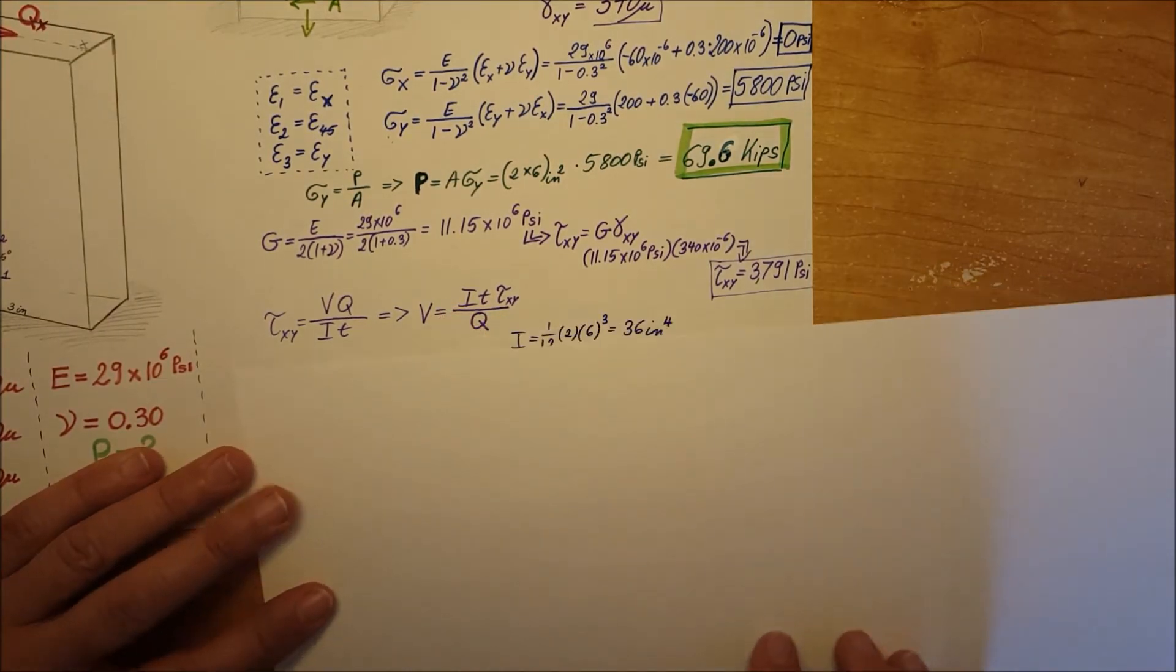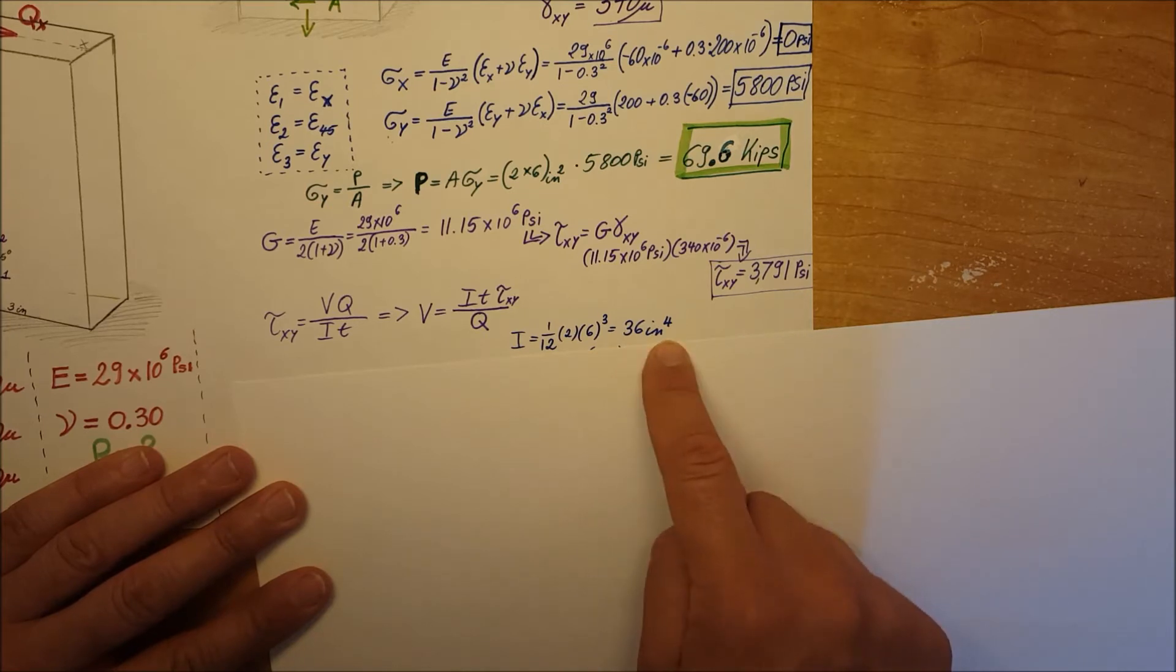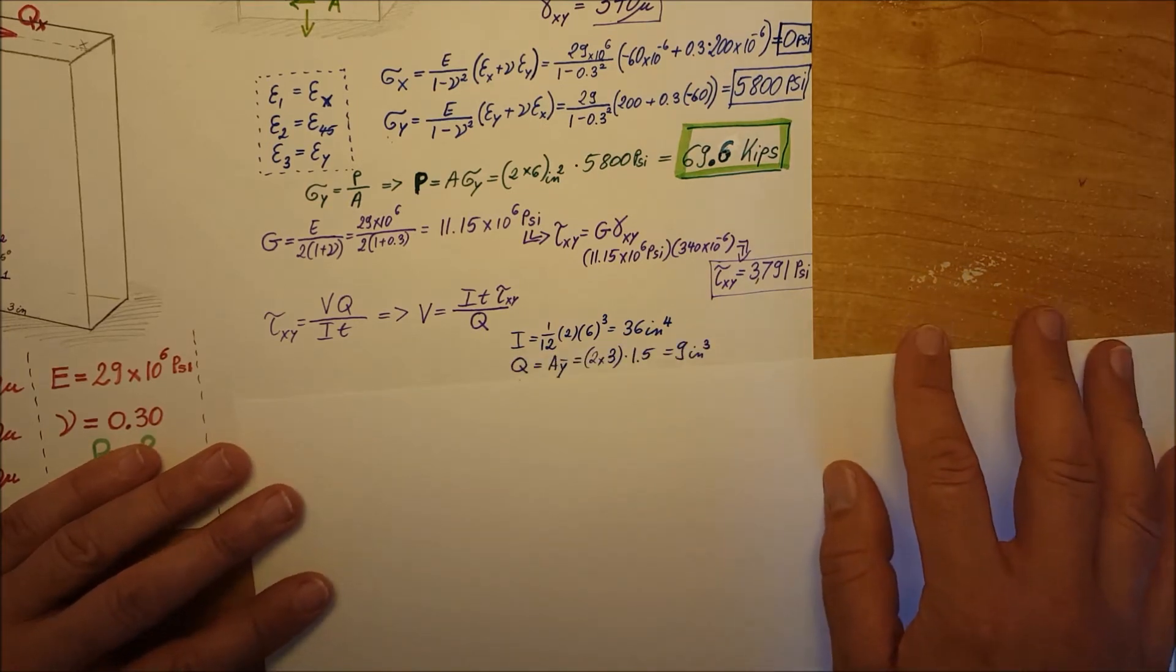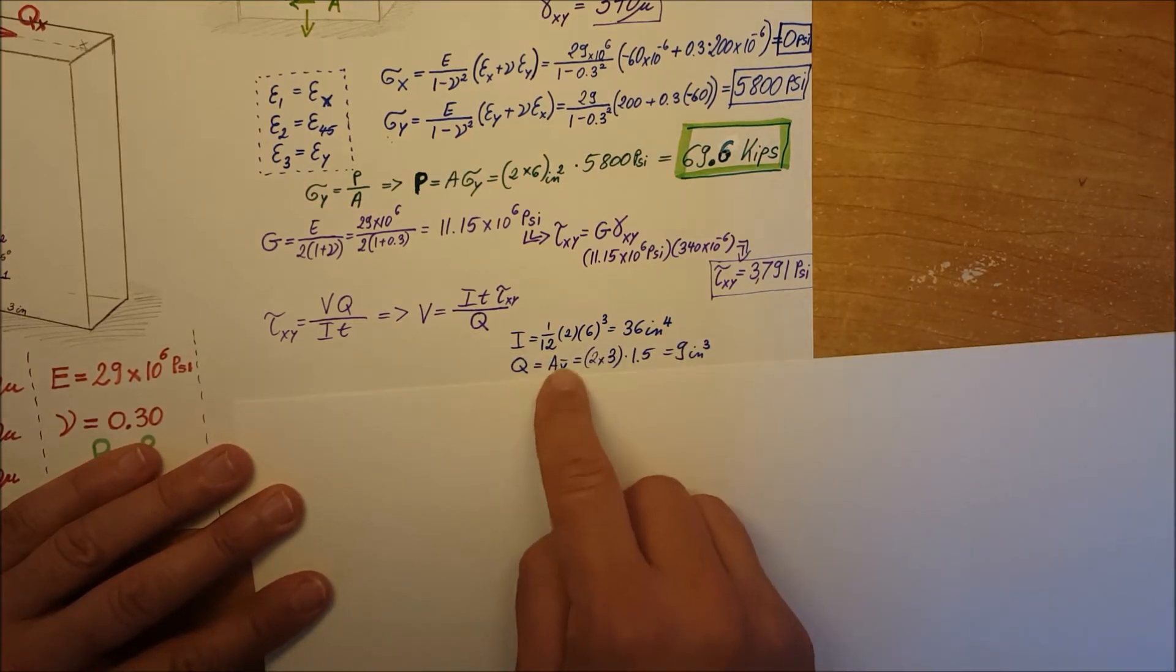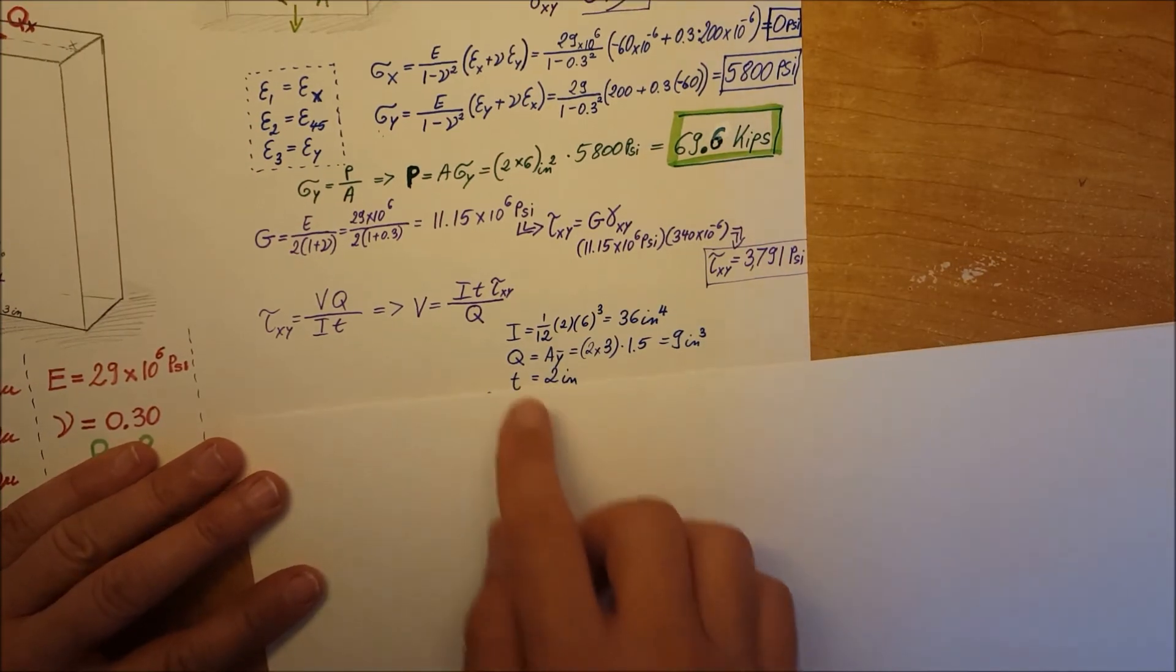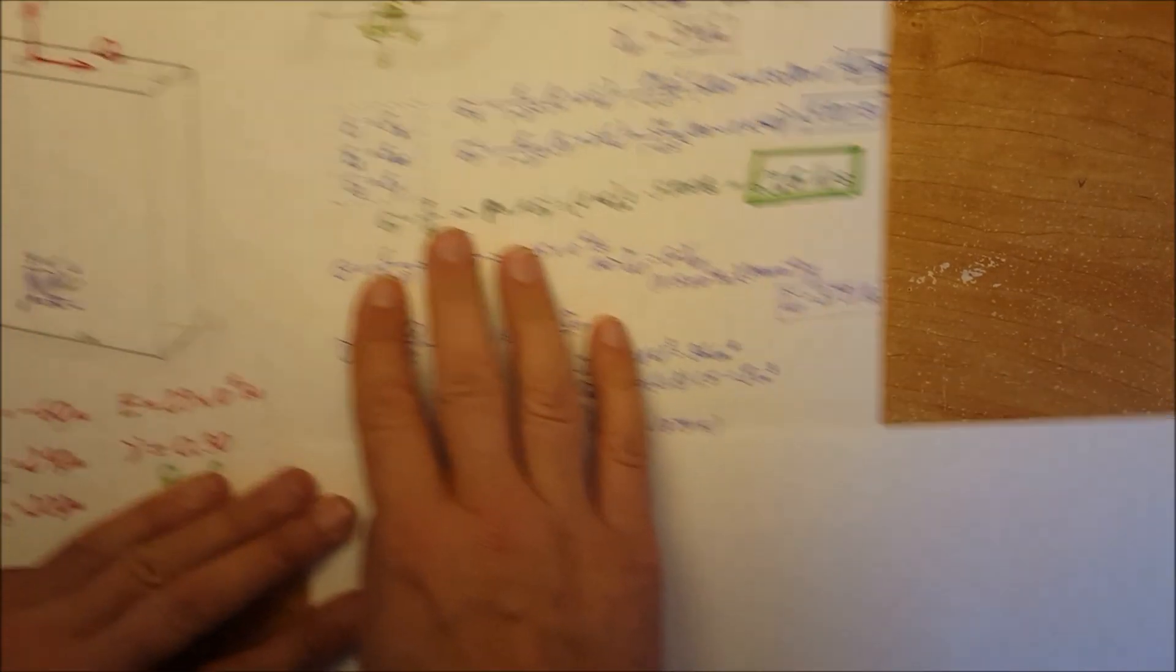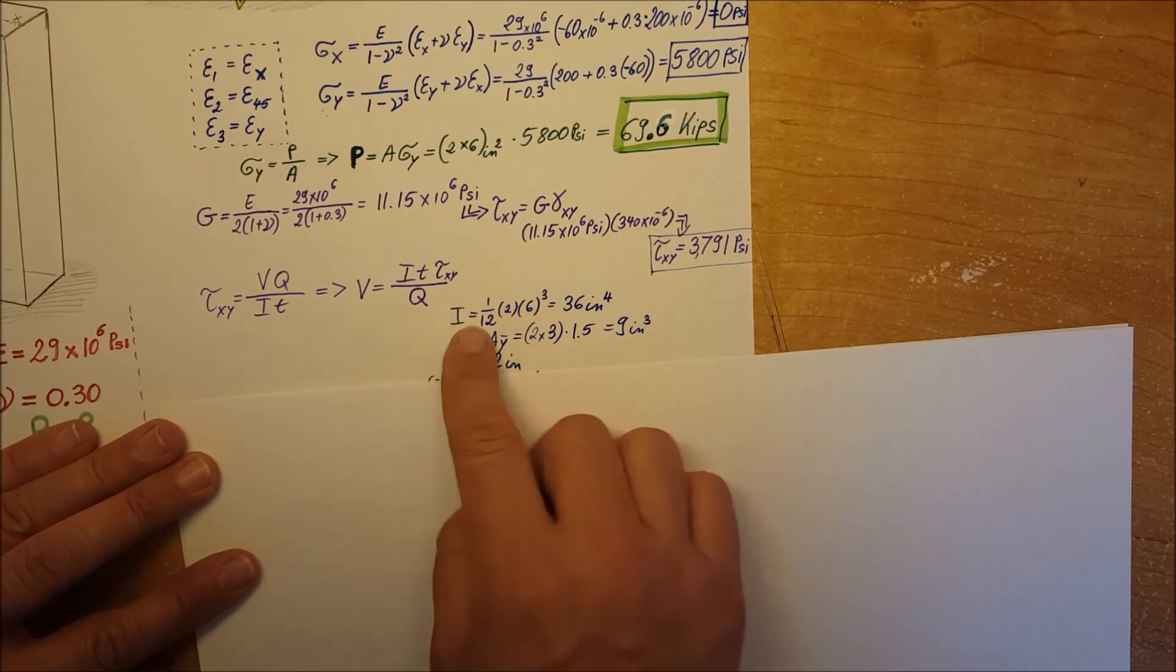I is the moment of inertia. We're dealing with a rectangle, so fairly straightforward—we can go ahead and calculate it. And t is given as 2 from our drawing right here.